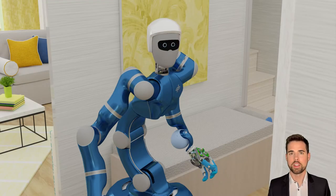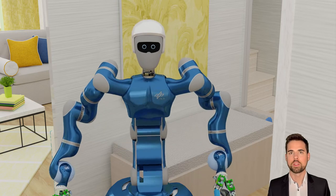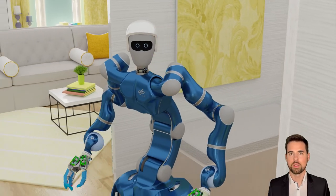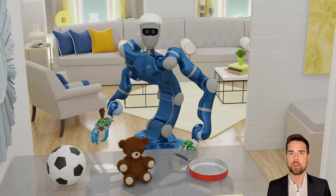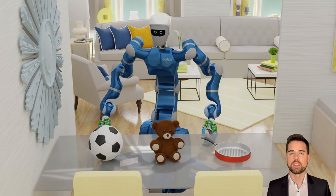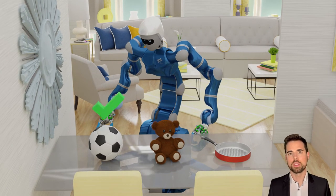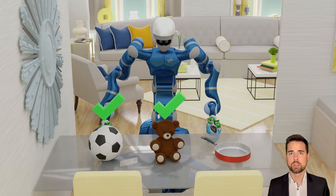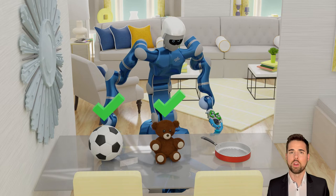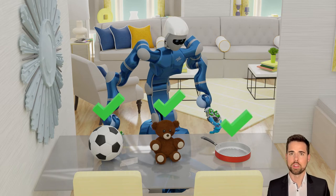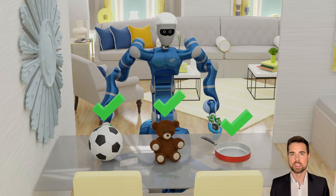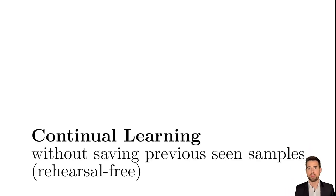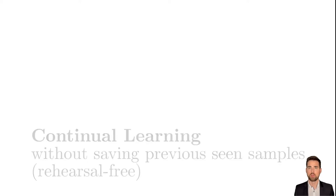A mobile robot like Justin is operating in a continually changing environment. Therefore, if the robot is exploring its surroundings, it is essential that it is able to learn new, never seen objects on the fly. And it is crucial that this learning is done without forgetting previous knowledge. We tackle this challenge with continual learning and we go even further as we don't want to save previously seen images. This is called rehearsal-free.